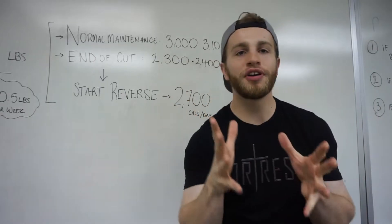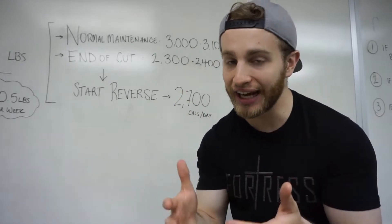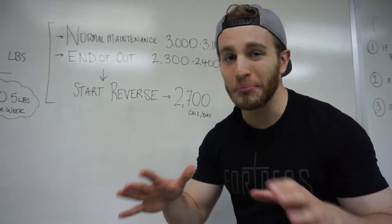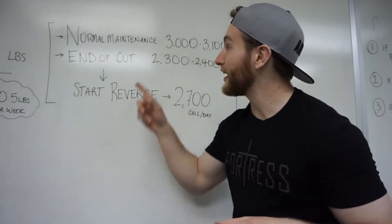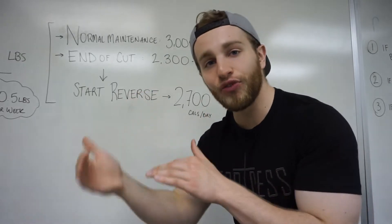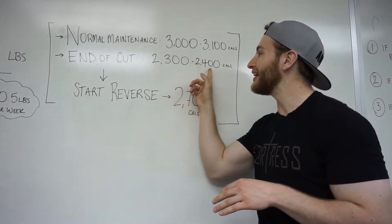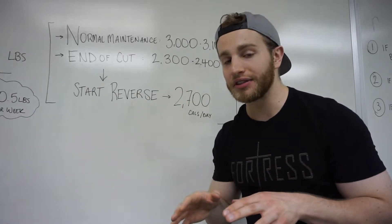Now important numbers to note in terms of how many calories I'm going to eat on a given day. Before I started the Shred 40 cut, my normal maintenance level of calories was around 3,000 to 3,100 calories a day. Getting down to day 40 towards the end of my cut, I was eating closer to around 2,300 to 2,400 calories a day.